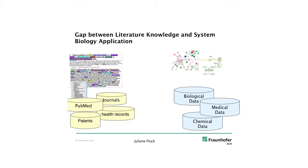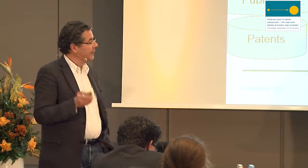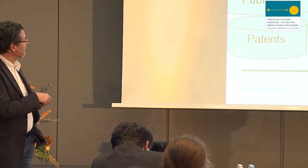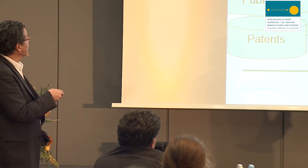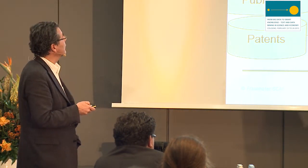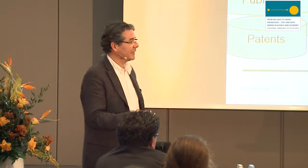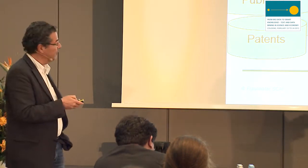The big theme we have been going through also in the course of this conference is that there is a gap between an understanding level — where we typically have models available — and the primary world of narratives, whether they come as scientific papers, journals, online sources, health records, or patents, which have also been mentioned and are of great interest in the industrial context. So how do we come from here to a model-based representation of what's going on? A pathway is a model — it's an abstraction, a mini-model — so we deal all the time with models even if we don't call them that.